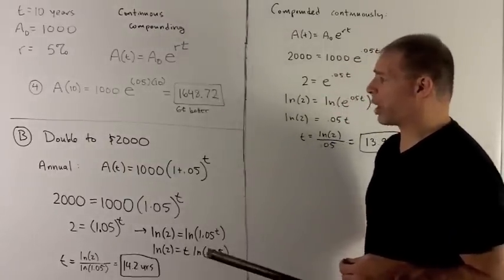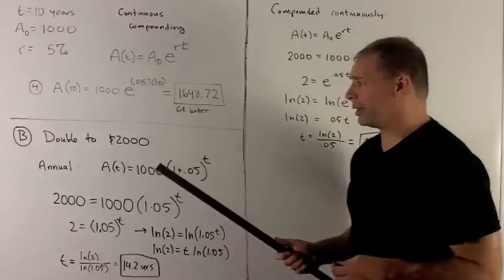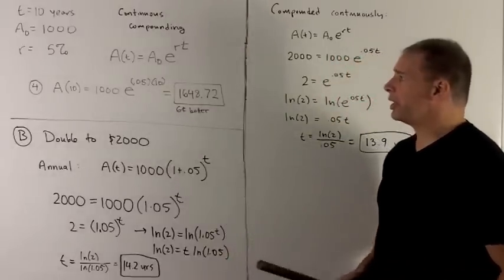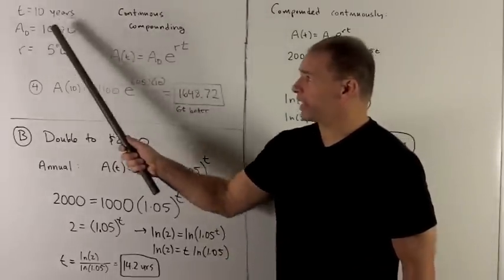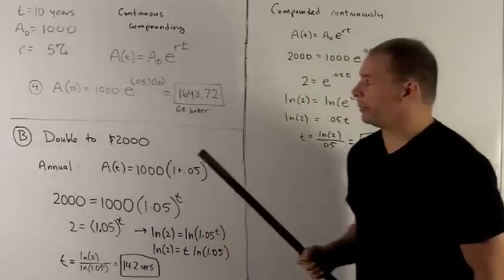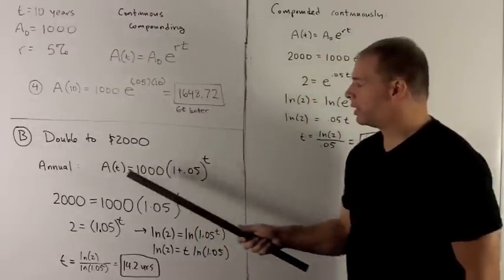Let's look at our second part, doubling our amount to $2,000. So I'm going to assume same initial amount, same interest rate.